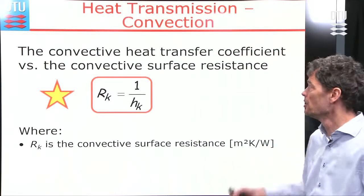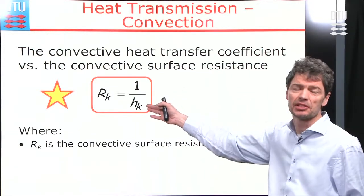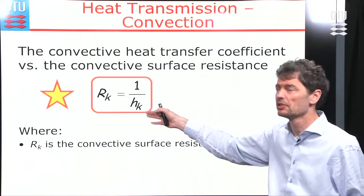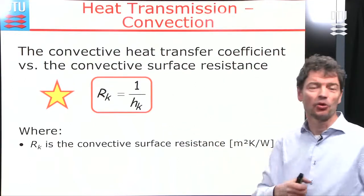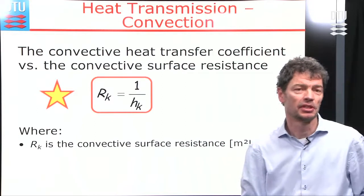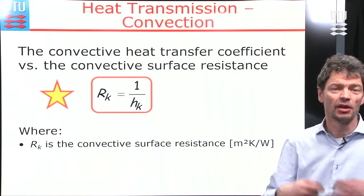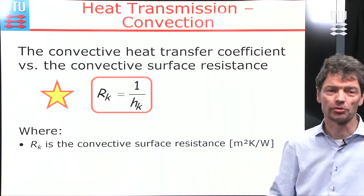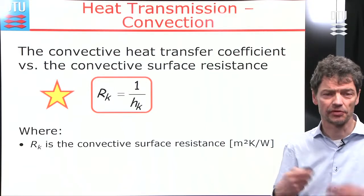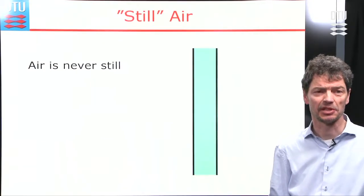For heat transmission by convection, we can also use the heat transmission coefficient, or one over that, which is the surface heat transfer resistance. At a surface, we have the transmission that takes place there.